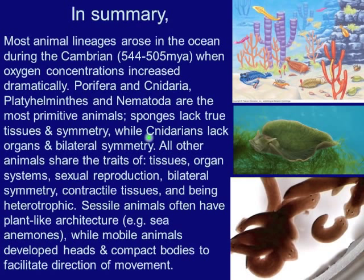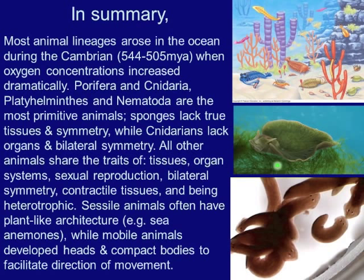Sponges lack true tissues and symmetry, while cnidarians lack organs and bilateral symmetry. All other animals share the traits of tissues, organ systems, sexual reproduction, bilateral symmetry, contractile tissues, and being heterotrophic. However, there is one sea slug that lives off the coast of the northeast Canadian coast which, when born, follows all of those animal traits, but can eat algae and steal the genes to make chlorophyll and chloroplasts, rendering it nearly autotrophic.